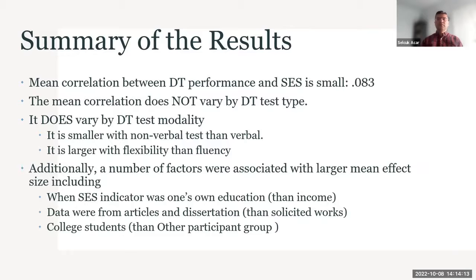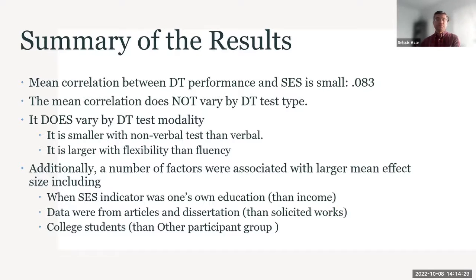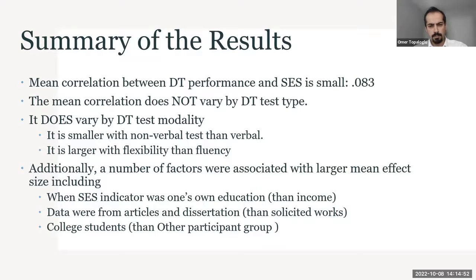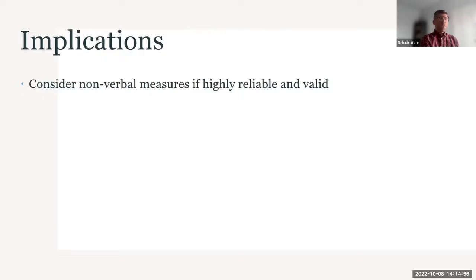In summary, overall divergent thinking tests have a small correlation with SES — less than 0.10 — and to me that's good news. Some scholars like the idea of incorporating creativity tests in gifted identification more than intelligence tests, because intelligence tests can put certain kids out of gifted programs. Specific test type was not significant, but it does vary by test modality: the mean effect size is smaller with non-verbal tests and larger with flexibility than fluency. One major practical implication is considering non-verbal measures of divergent thinking — if they are highly reliable and valid — as a viable suggestion based on these findings.